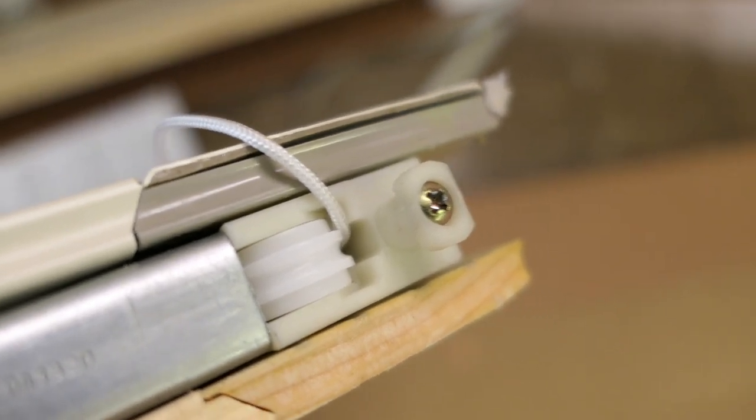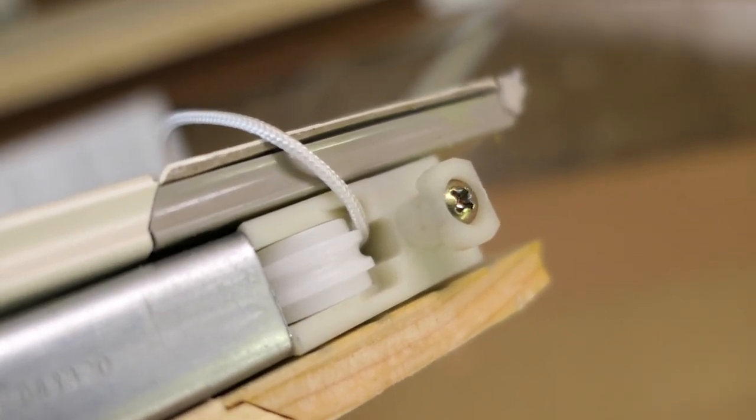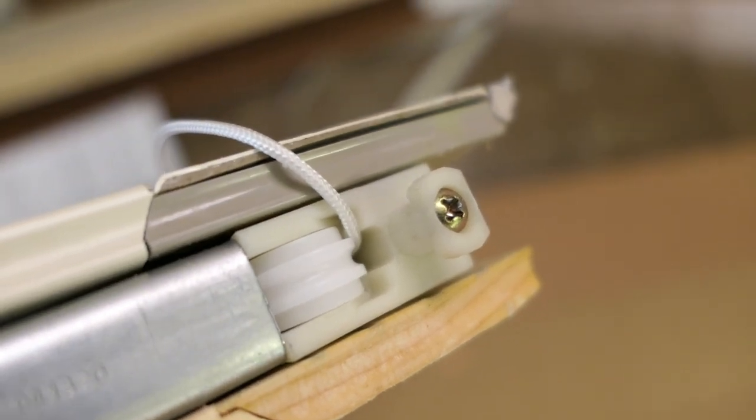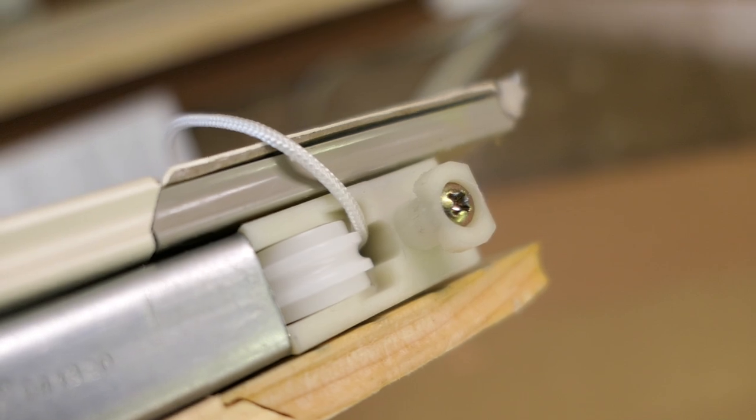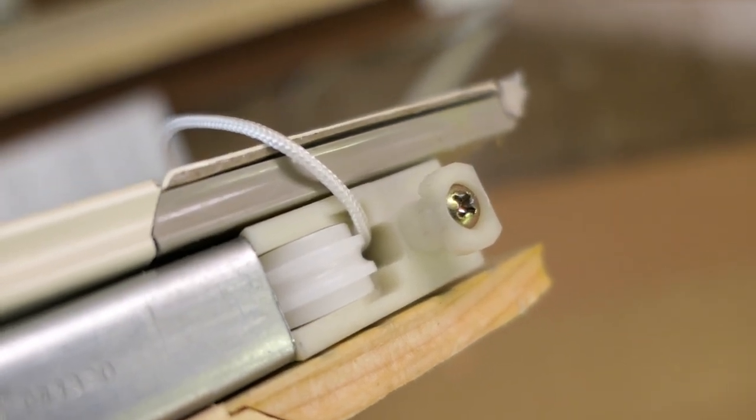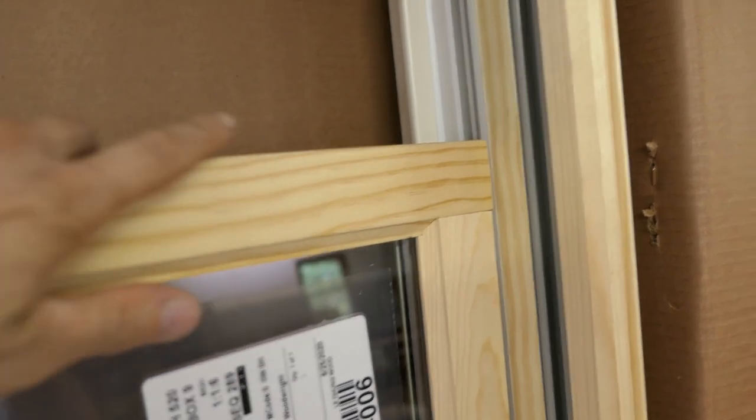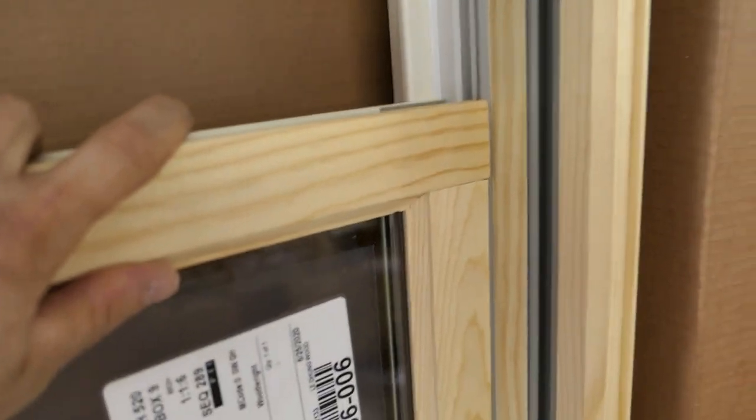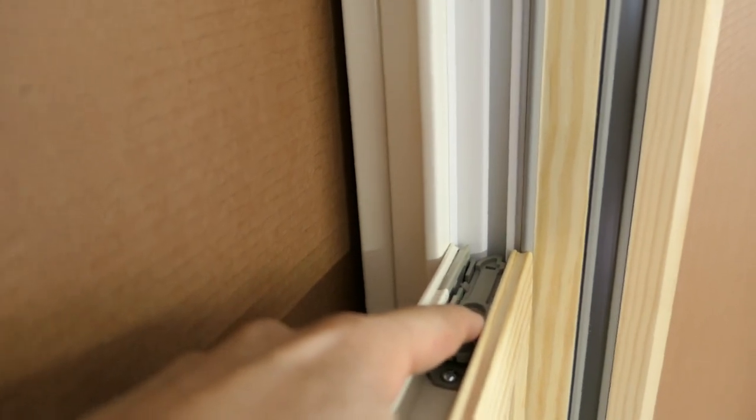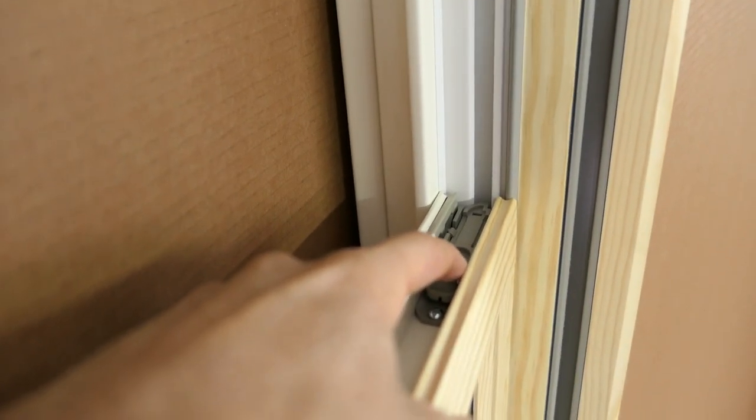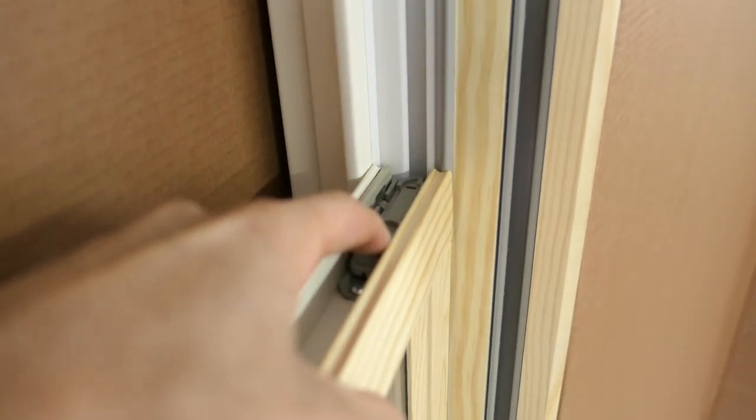You can pull the string out of that roller and pinch it between the housing and the roller itself. I've had an Anderson rep tell me it was designed this way so you could easily remove the windows. I call bullshit on that.